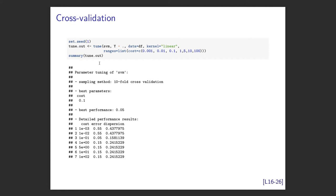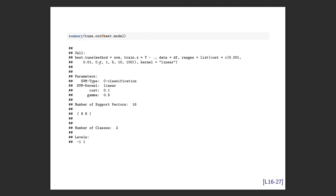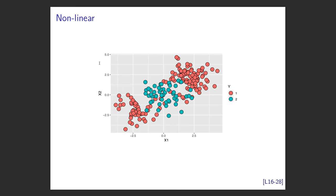The tune() function lets you specify the method (svm), formula (y tilde dot), data, kernel, and a list of possible cost values (e.g., 0.001, 0.01, 0.1, 1, 5, 10, 100). It uses 10-fold cross-validation and tells you the best parameter. In this case, the best cost found was 0.1. The summary gives 16 support vectors — 8 for each side — two classes, C-classification, linear kernel.